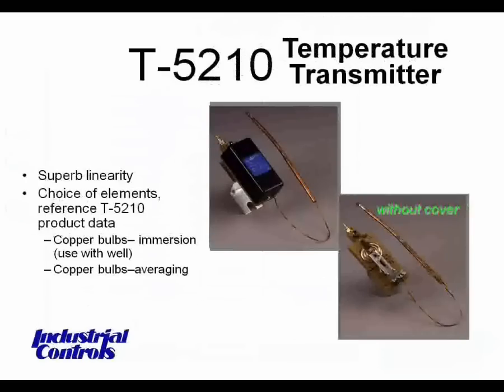Bulb units — this is a T5210 temperature transmitter, and other brands are very similar. Bulb units are small, used in small ducts to monitor air temperature, or used with a well to monitor fluid in a pipe.